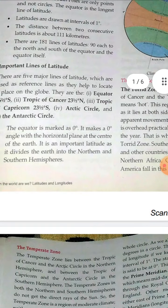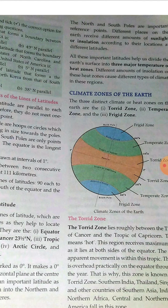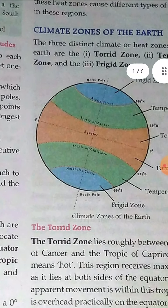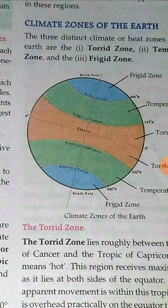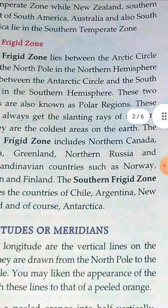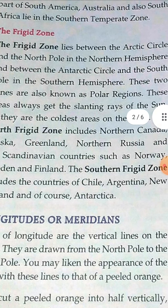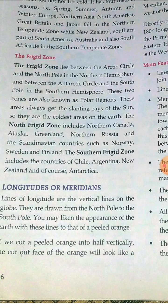The Frigid Zone is marked in blue. In the northern hemisphere it lies between the Arctic Circle and the North Pole, and in the southern hemisphere between the Antarctic Circle and the South Pole. These two zones are also known as polar regions. These areas always receive slanting rays of the sun, so they are the coldest areas of the earth.